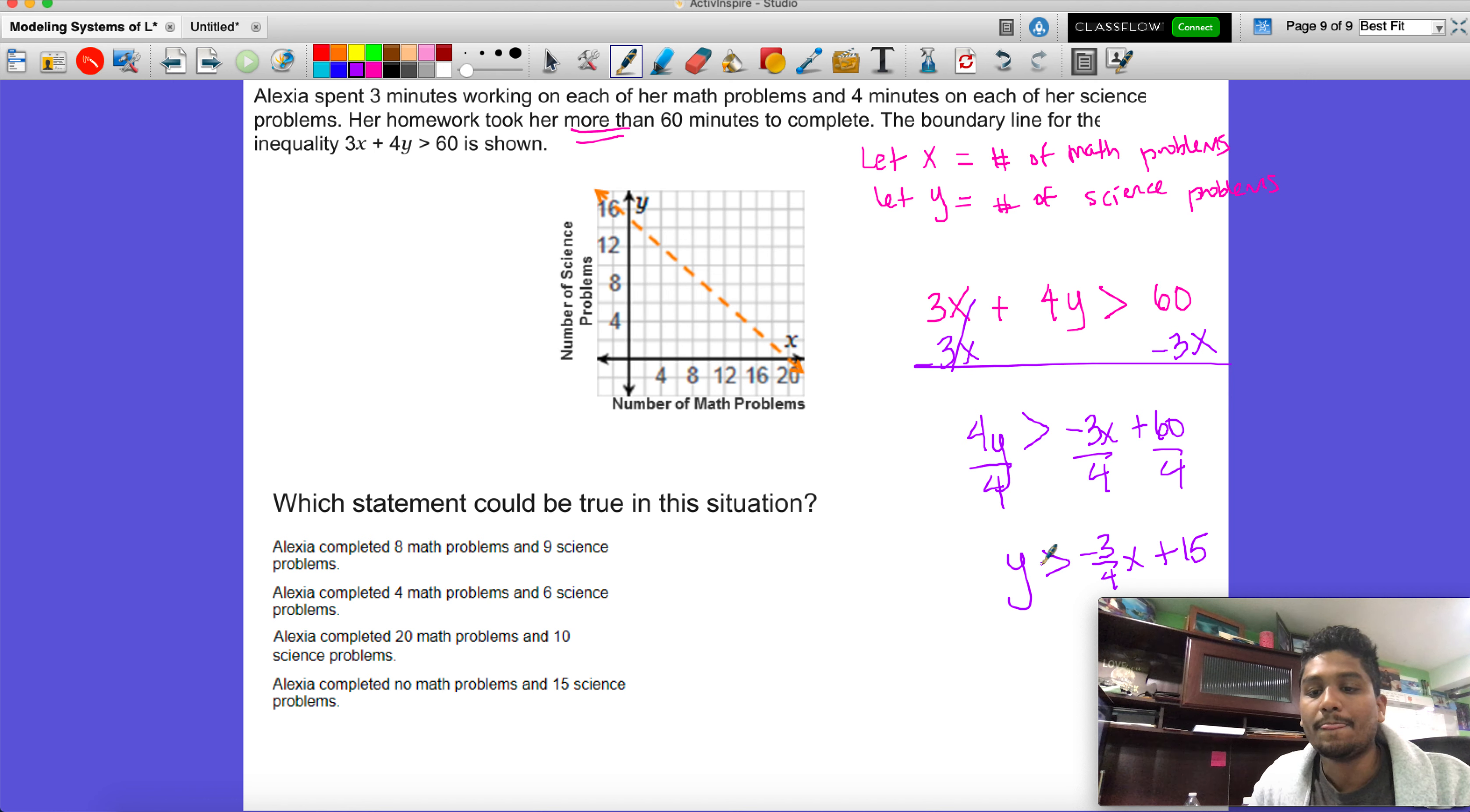Which they have here. They started at the correct number. The greater than part implies that we'll be shading in which direction? We'll be shading above. So now we simply just have to look at the coordinates.